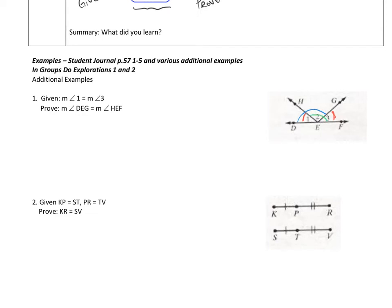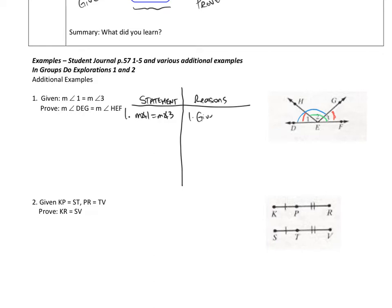Let's see what we can do. I'm going to start and do my T-chart with statements and reasons. I always start with the given, so the measure of angle 1 equals the measure of angle 3, and this is the given.